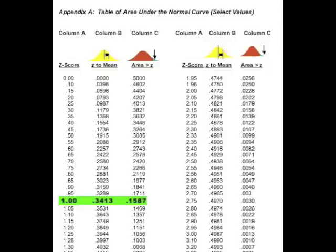To read this table, notice that there are three columns. Column A refers to the Z-score. Column B refers to the area between the mean and some Z-score. And column C represents the area more extreme than that Z-score.